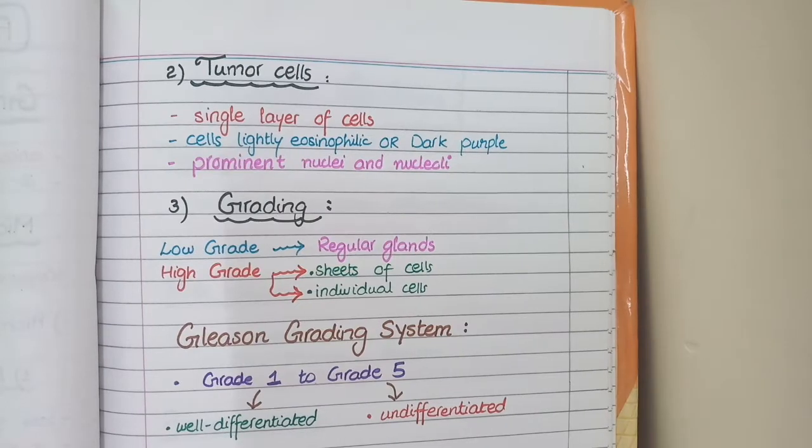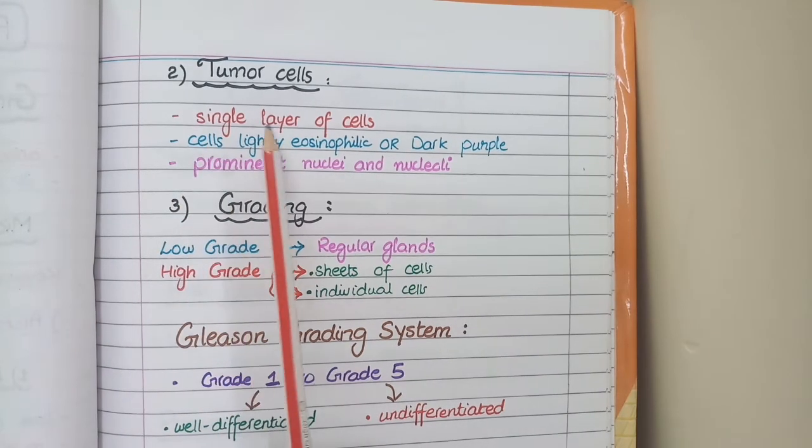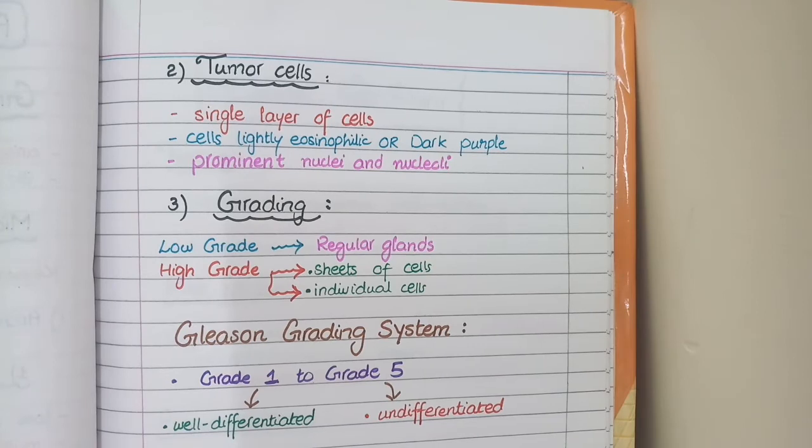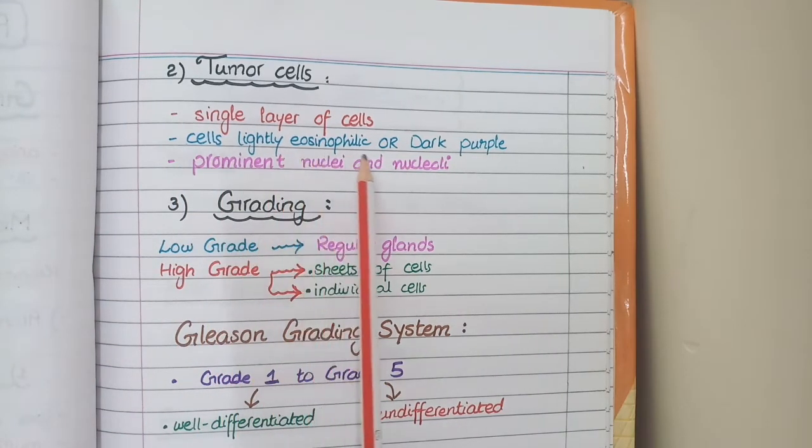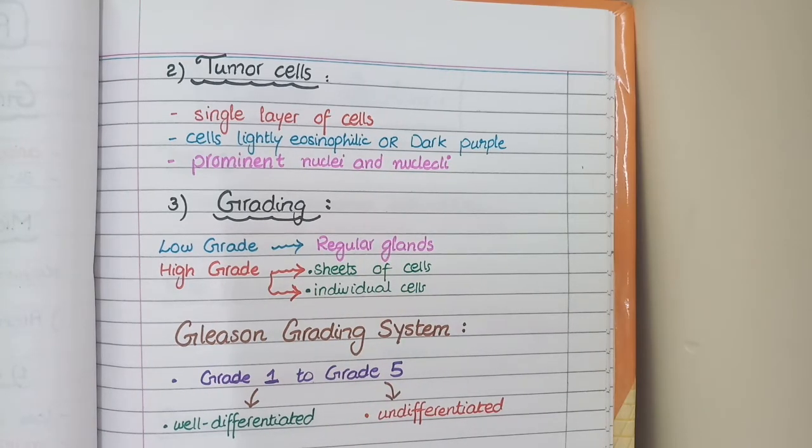Now the second heading which we are to discuss is the cytology of tumor cells. Firstly, as I have already said that in prostate carcinoma, there is only a single layered epithelium instead of normal double layered epithelium. Secondly, the cells in prostate carcinoma stain lightly eosinophilic or dark purple. This dark purple color is due to abundance of ribosomes and rough endoplasmic reticulum which are required by tumor cells to synthesize a lot of proteins in demand.